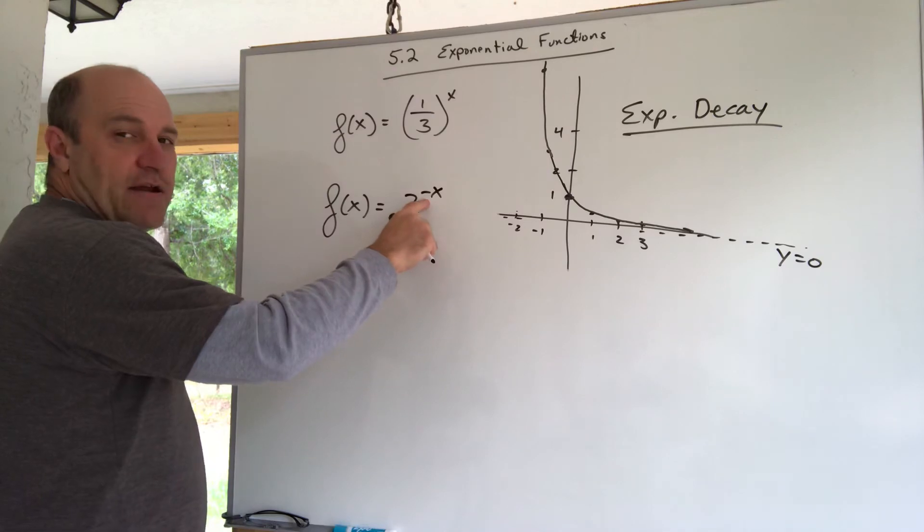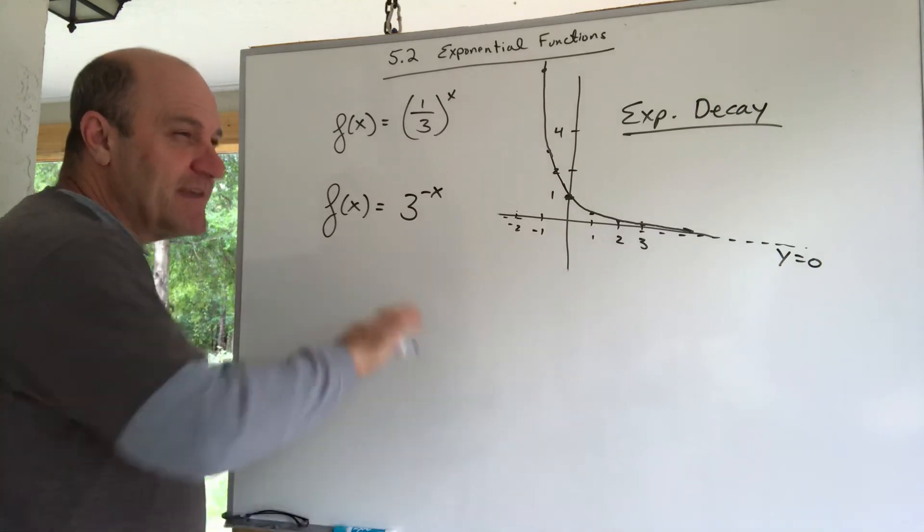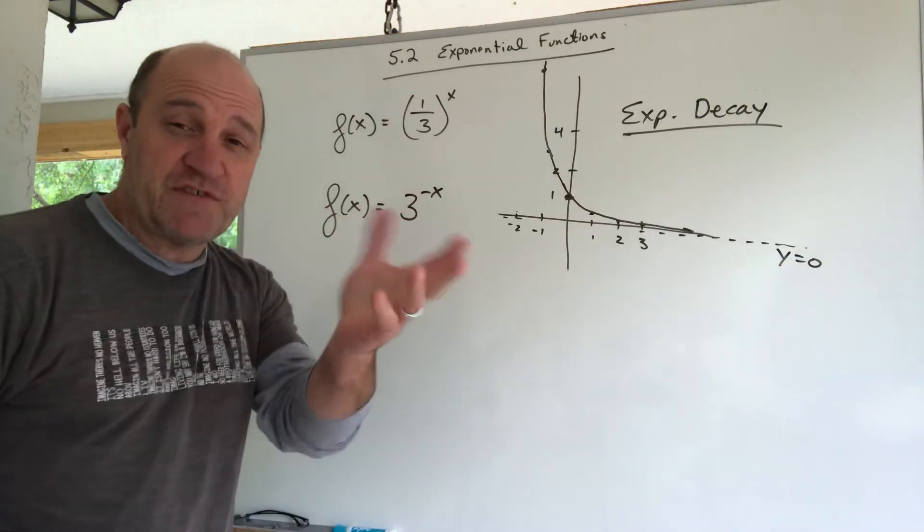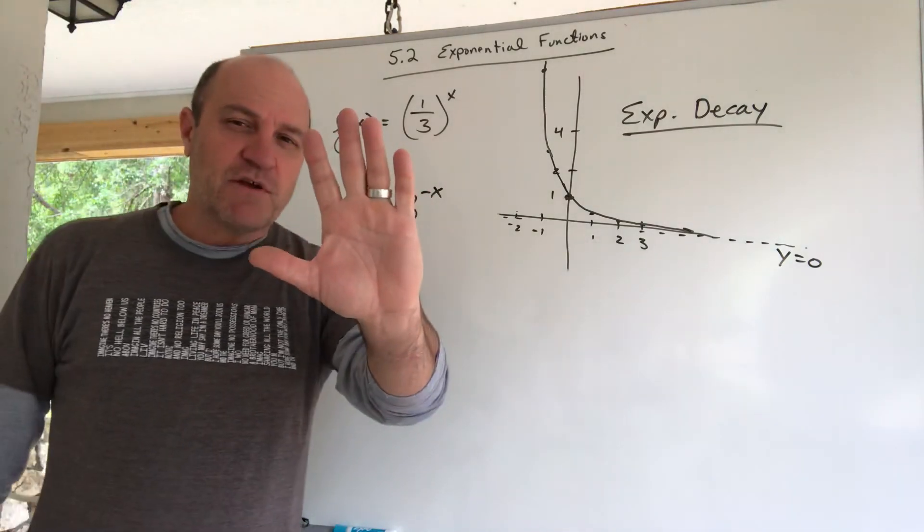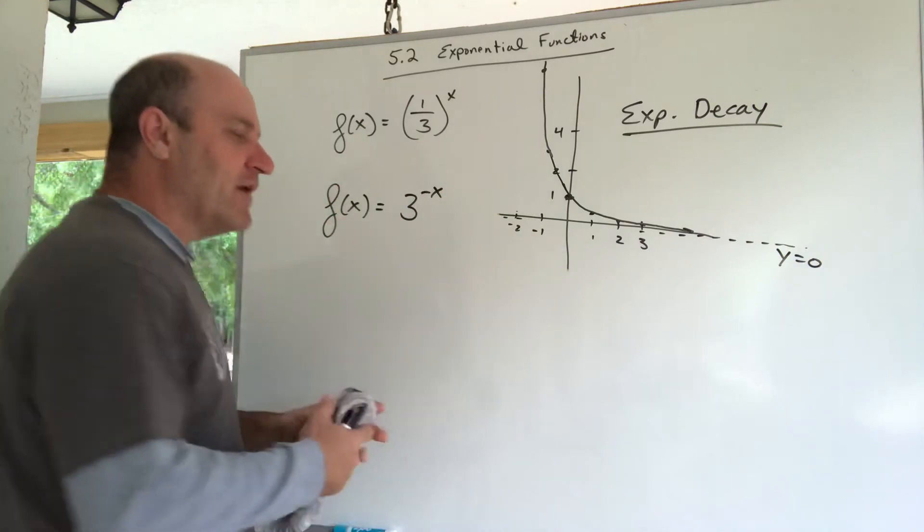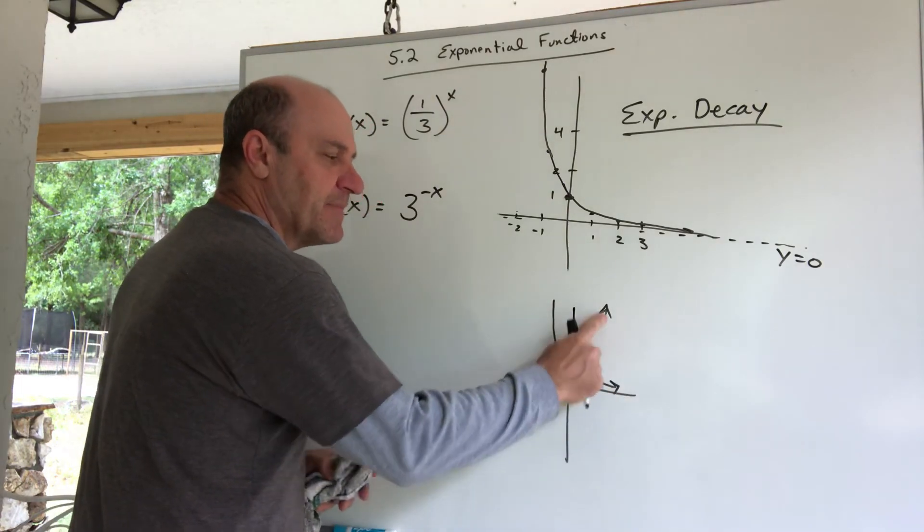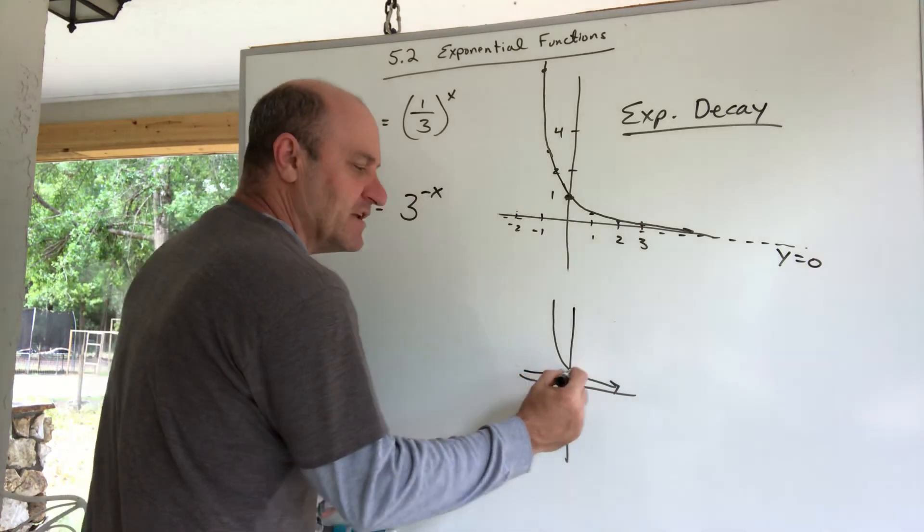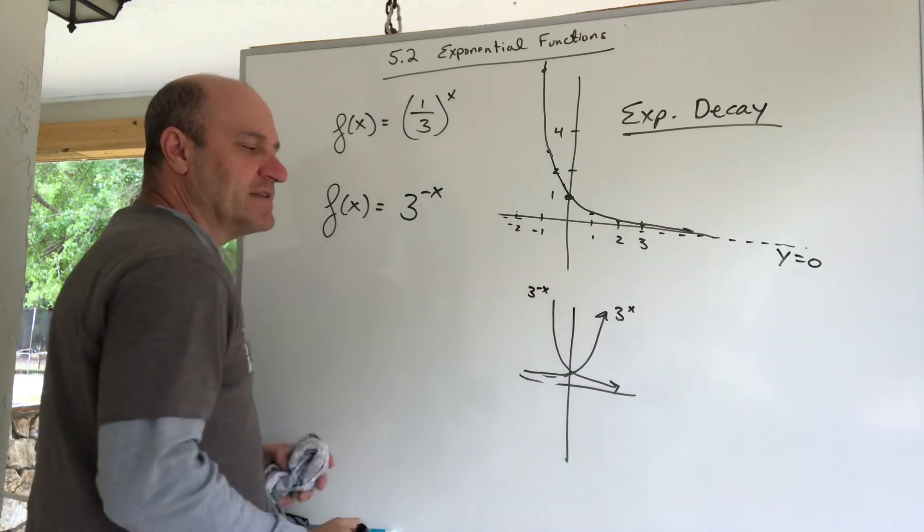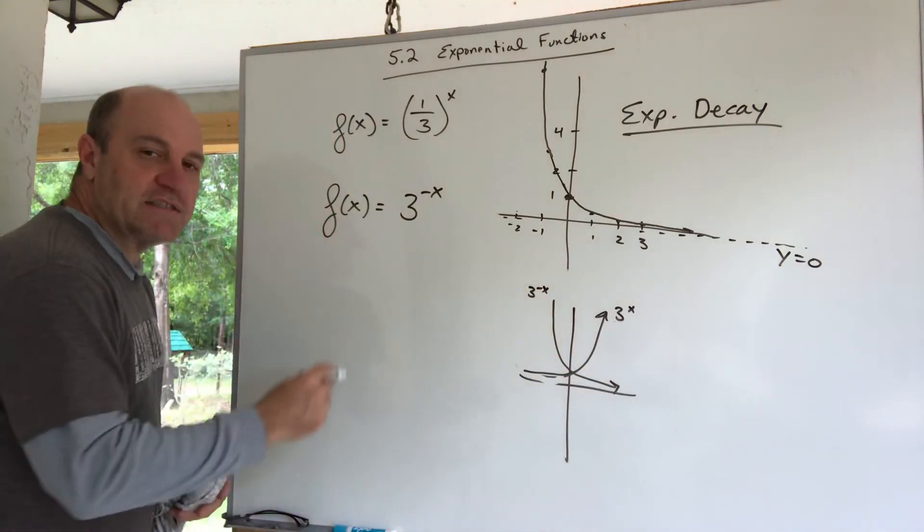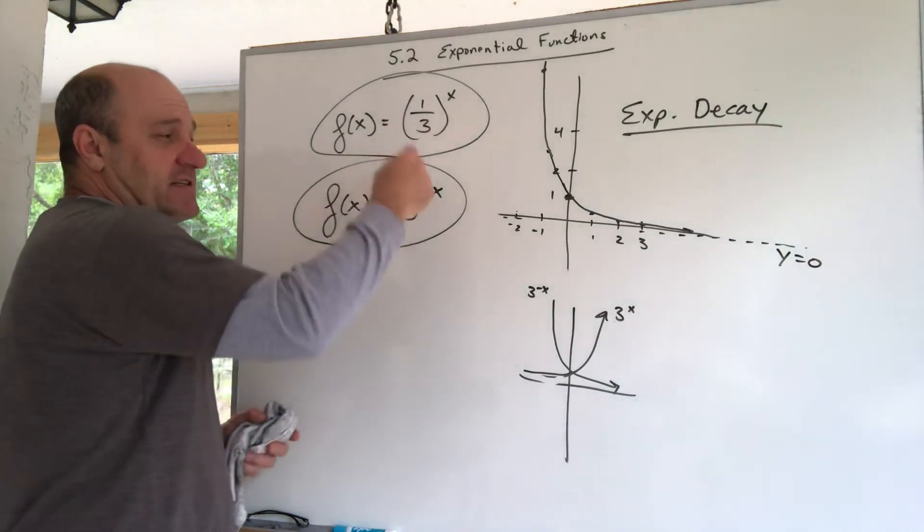When I put a negative sign on that exponent, now my base is bigger than one, but when I put a negative sign on that exponent, that switches things up. Maybe you remember the old shifts and transformations. This negative sign on the X flips the graph sideways, and flipping the graph sideways would take good old exponential growth and turn it into exponential decay. This would be three to the positive X, but when you put a negative on it, it's three to the negative X, it's decay. So there's two ways to exponentially decay. These are actually the same graph here.